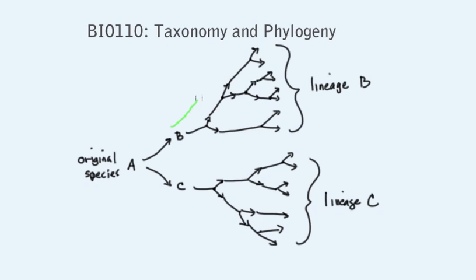All of these species in lineage B are more similar to each other than they are to any of the species in lineage C, because they all descend from species B. The organisms in lineage C do not descend from species B, and therefore if there are any B-specific characteristics you expect to find them in the organisms of lineage B, but not in lineage C.